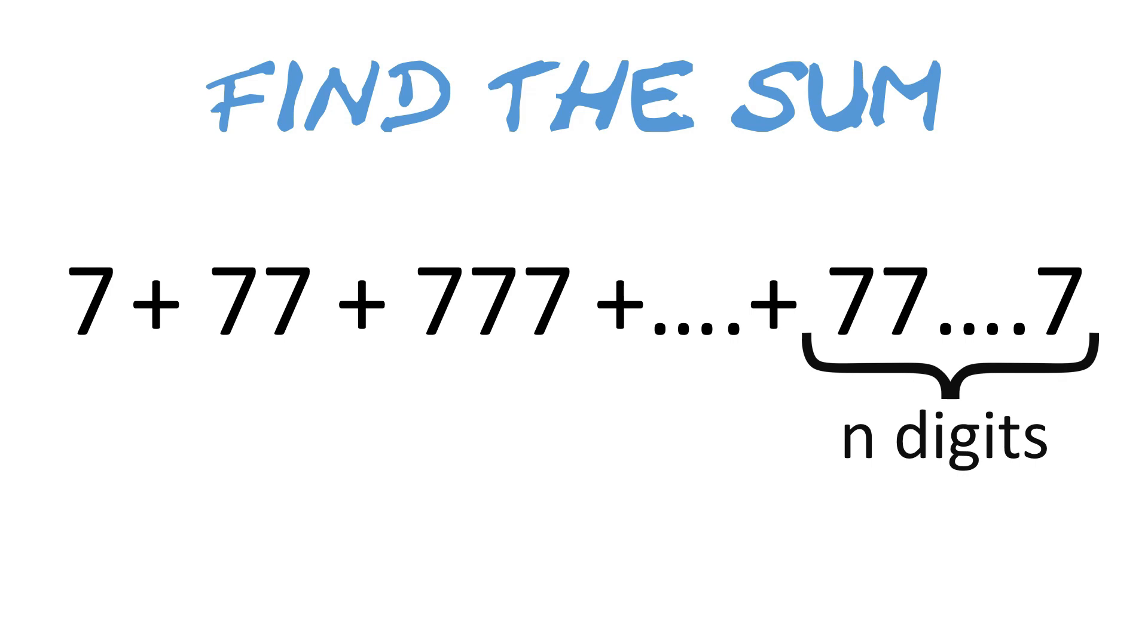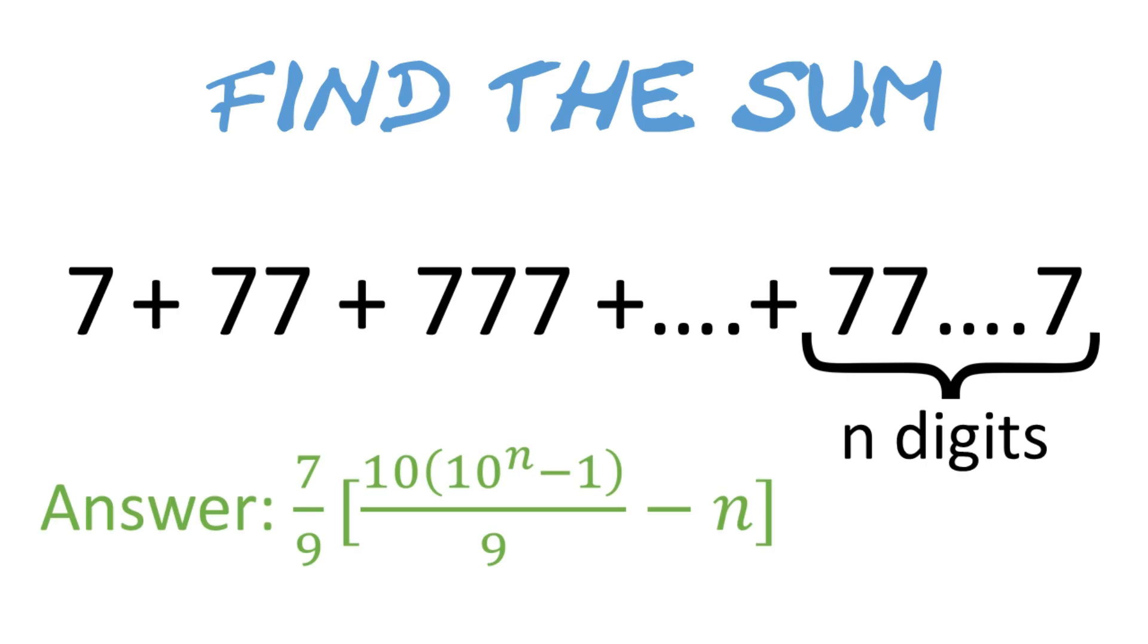Let's walk through the solution. The answer to this problem is 7/9 times the following quantity, where the first term is a fraction whose numerator is 10 times 10 raised to the power n minus 1, and the denominator is 9, and then we subtract n from this term.